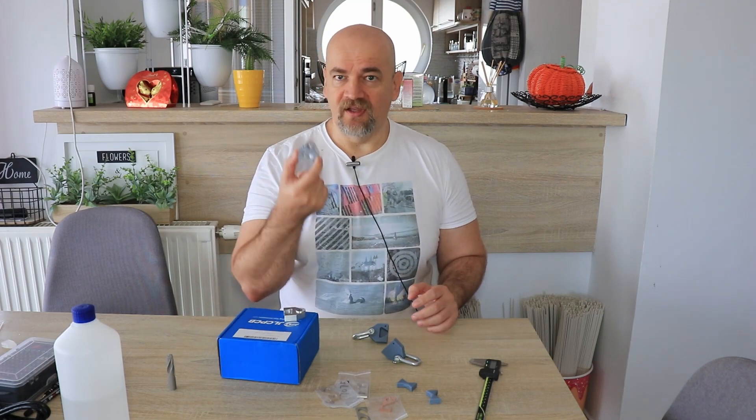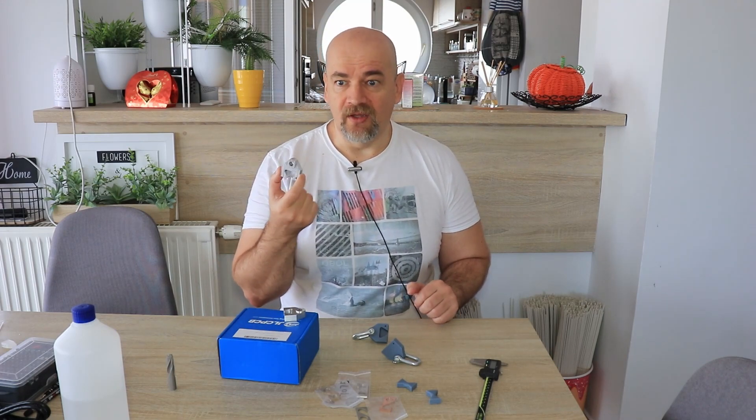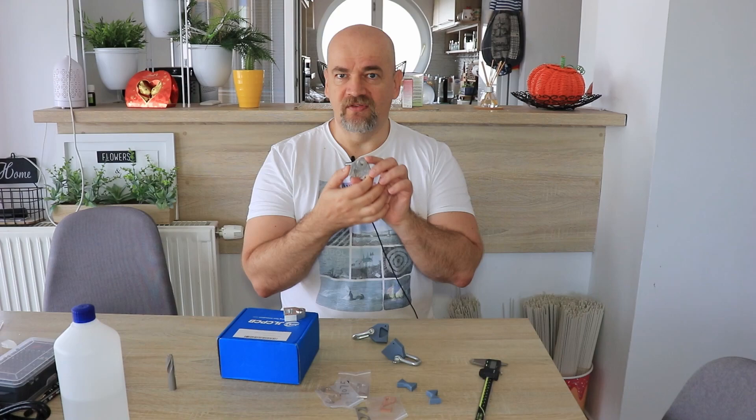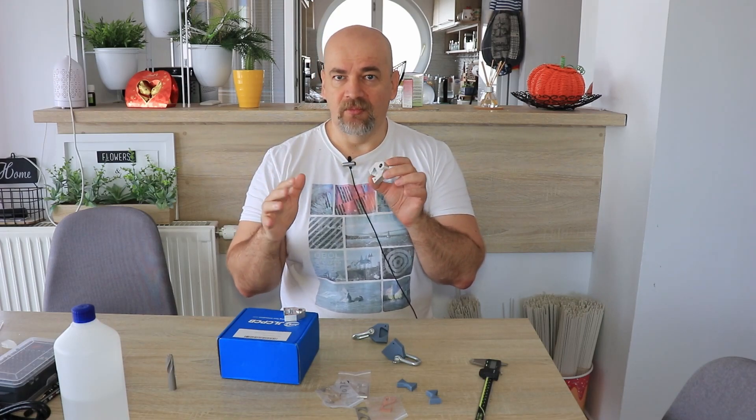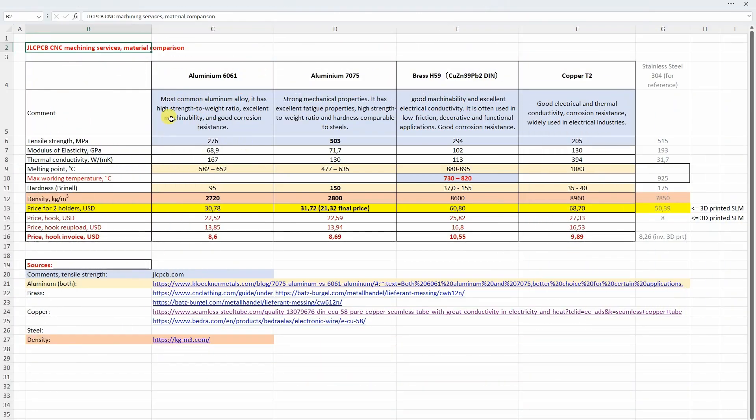Actually I got these test objects in a little bit more than a week, so from the ordering until I received these objects just 8 or 9 days, so this was incredibly fast. In this Excel table I summarized the specifications of these 4 metals available for CNC machining and also included some stainless steel data just for reference. And this Excel table is reviewed by JLCPCB and they even entered some data themselves.